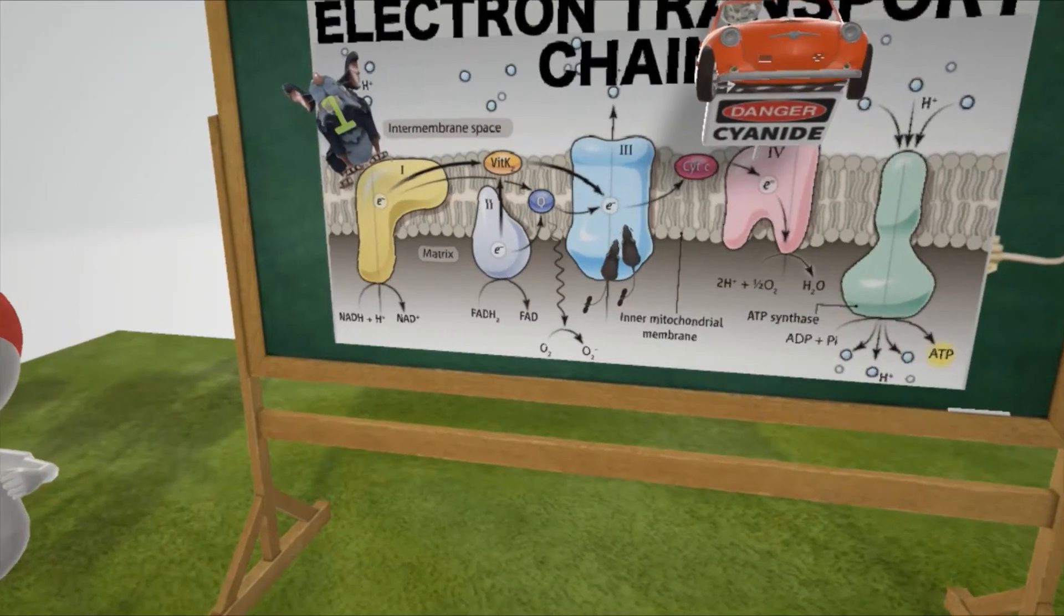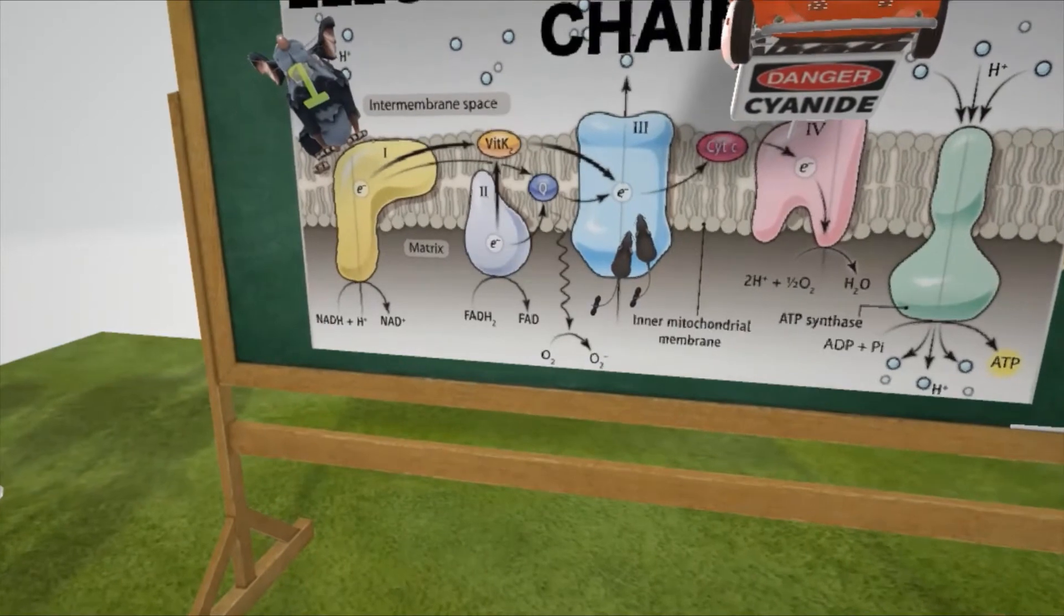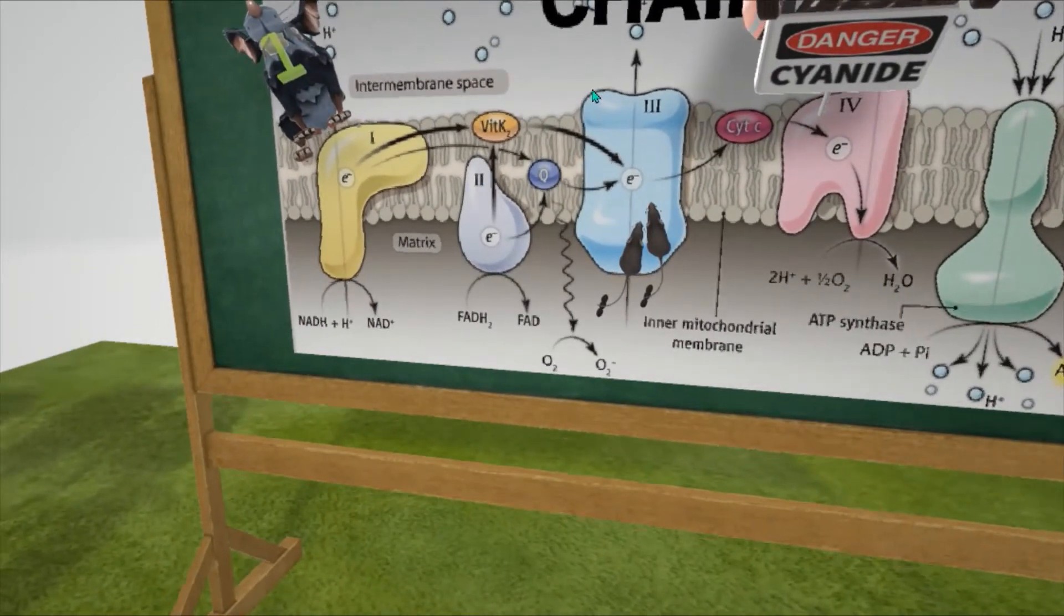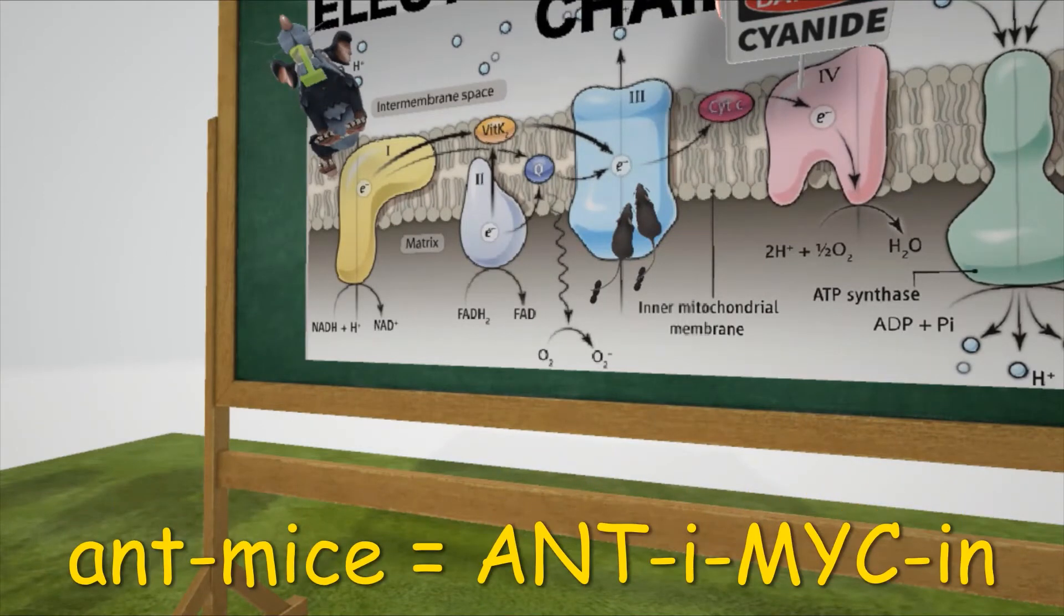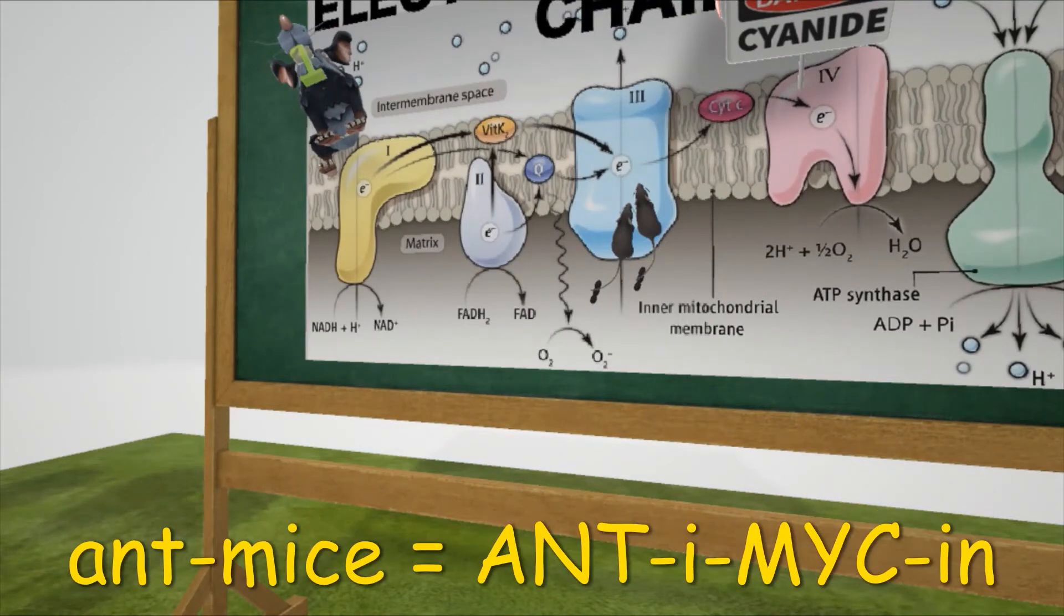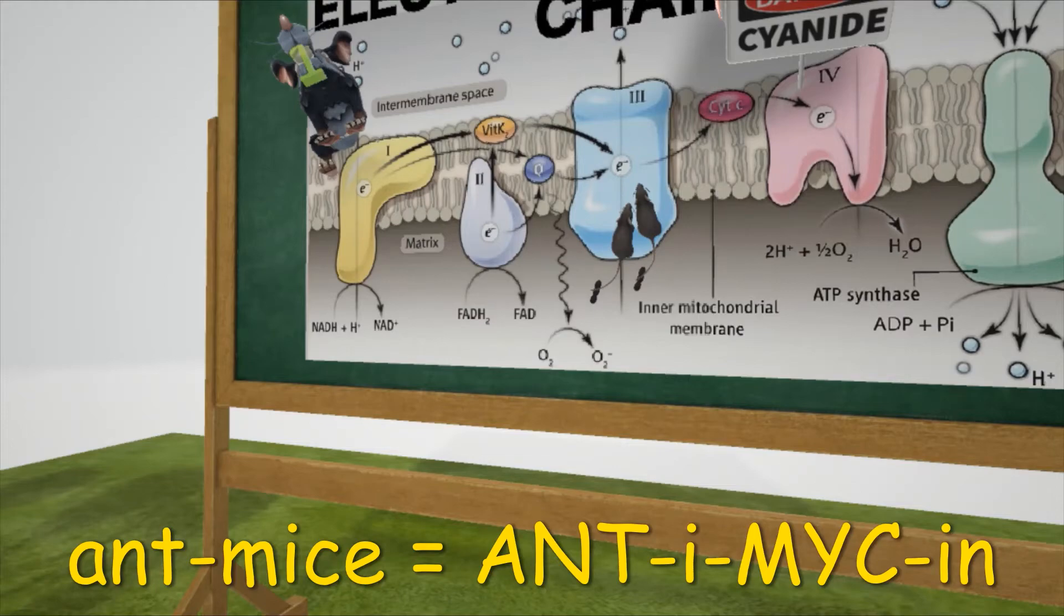In complex 3, we're going to skip complex 2 because there's no specific inhibitors for that that we need to be aware of. But we have these mice over here with ants on them. Mice, ants, or we'll say the ant mice for antimycin. Antimycin A is a complex 3 inhibitor.